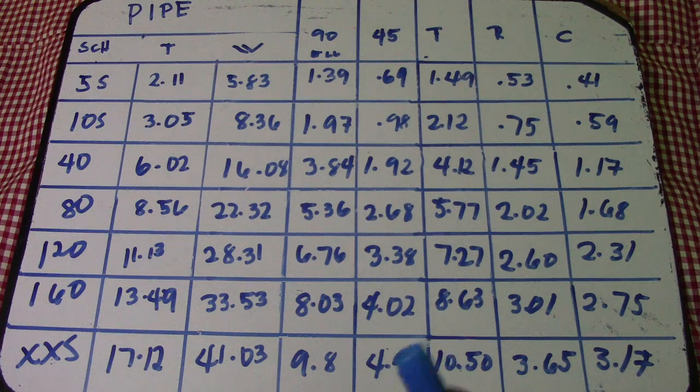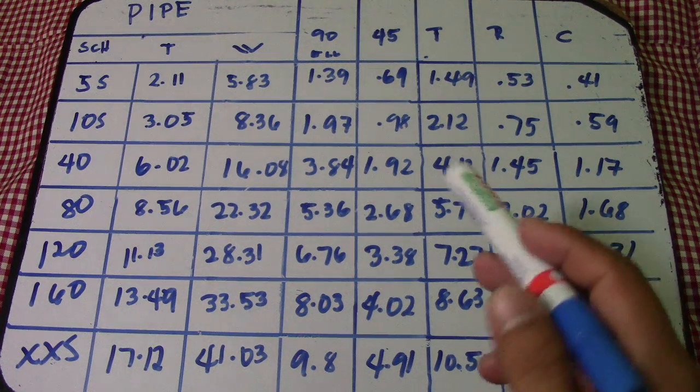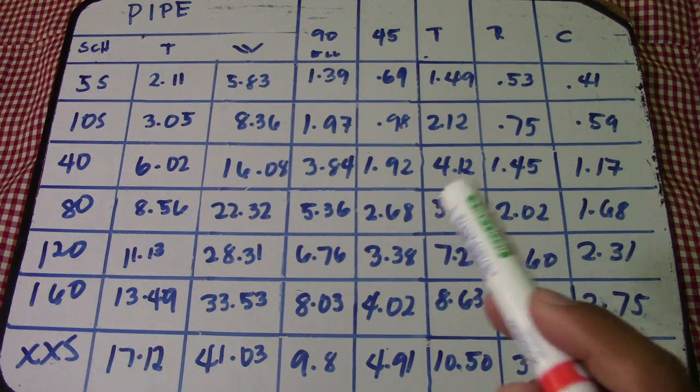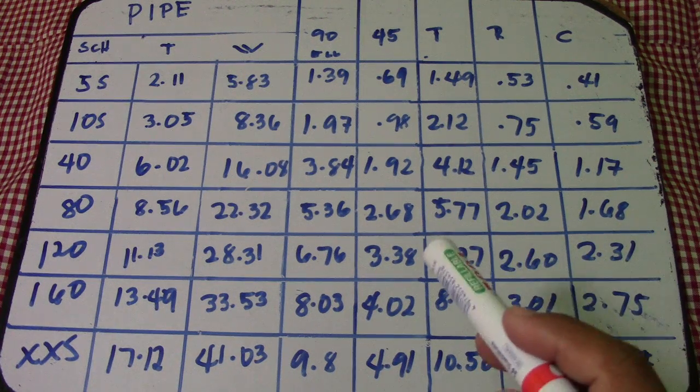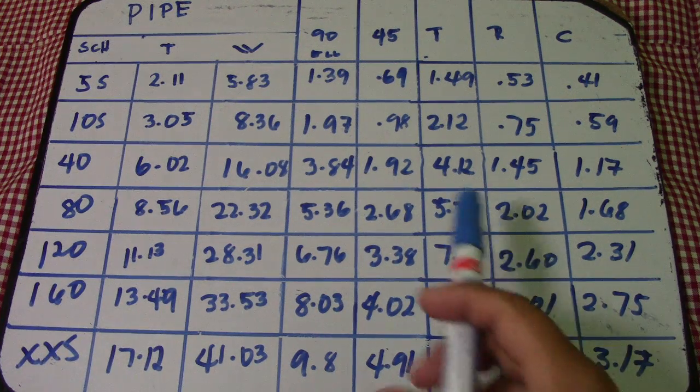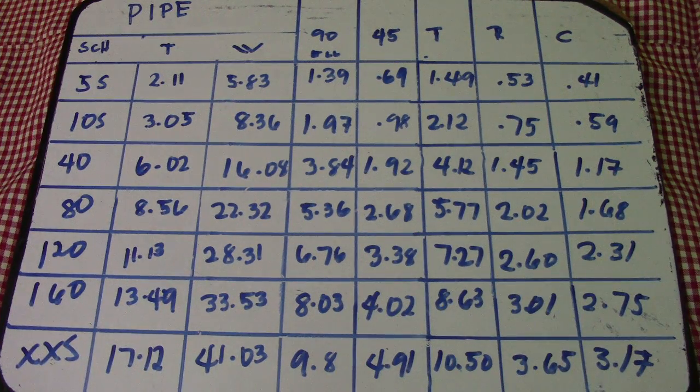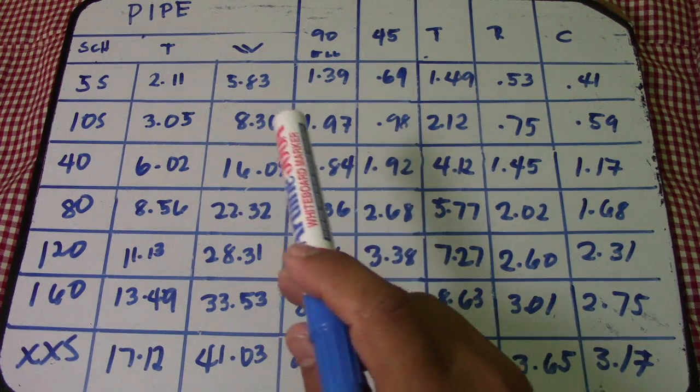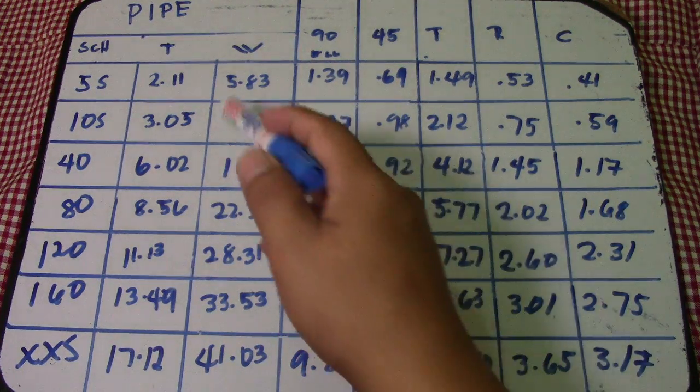This is for only NPS 4 inch - nominal pipe size for 4 inch. We have a table here. This table is for only 4 inch.